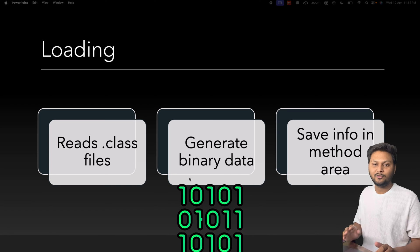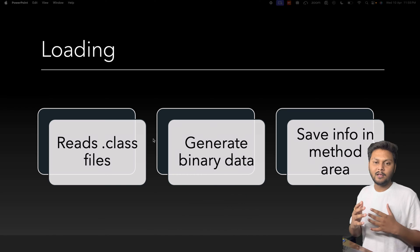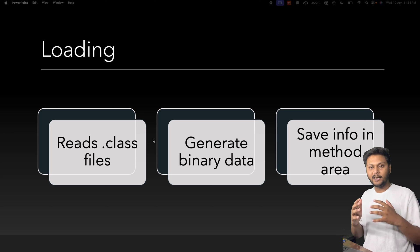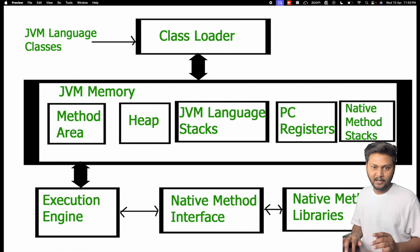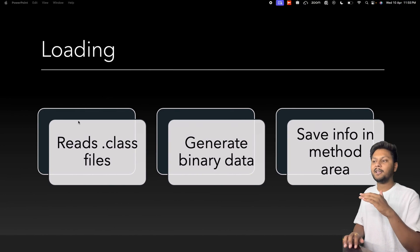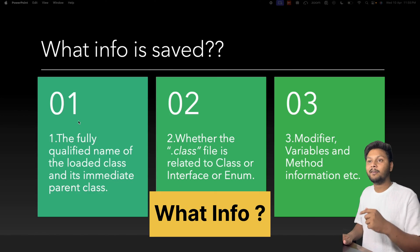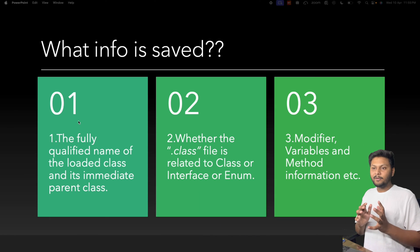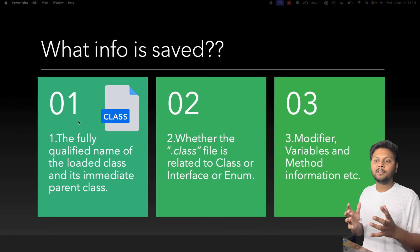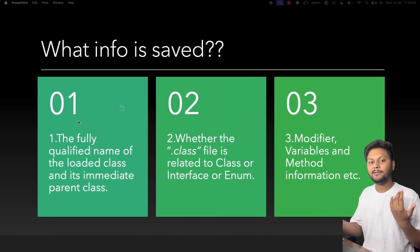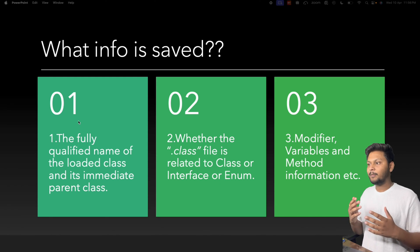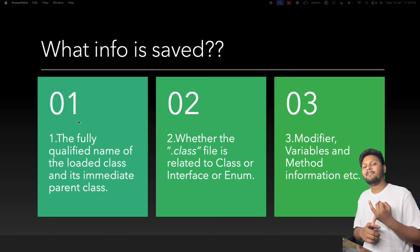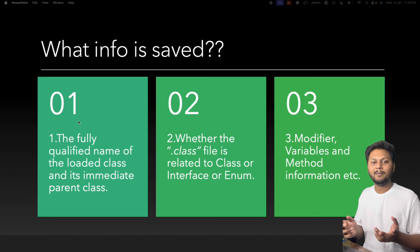After loading generates the binary data, some basic information will be stored in the method area. Specifically, it saves the fully qualified name of the class and its immediate parent class. If the class is related to any interface or enum, that information is also stored, along with variables, modifiers, methods, and other information.